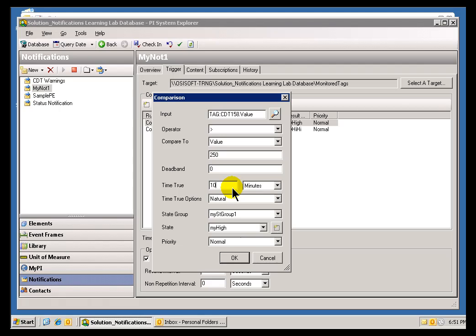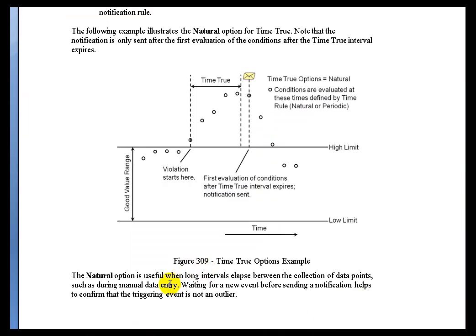We're going to make this Natural Scheduling, or Natural Time True Option, based on the activity of new values coming in to be evaluated in the Notification. It works something like this illustration that you see in your Class Materials. Imagine that we've got a Sequence like you see right here, in which these Values are coming in, and they're not above the High Limit yet. So, this right here is the High Limit. Until we go above that High Limit, there's no Notification condition that becomes True.